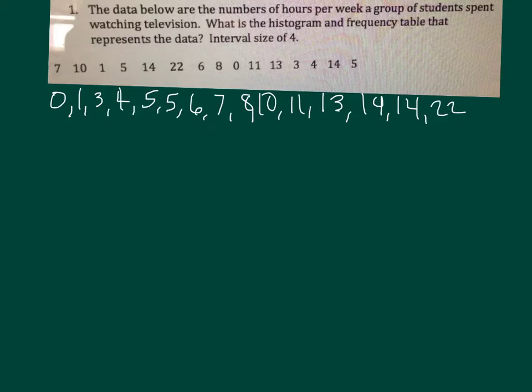Since we're doing interval sizes of 4, you figure out what's your smallest number. My smallest number is 0, so I start at 0 and then I count on my hand. So I count to 4 numbers after 0. You have 0, 1, 2, 3. So 0 to 3 is 4 numbers.